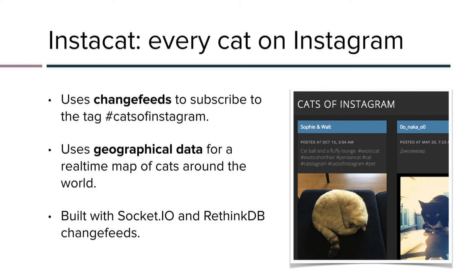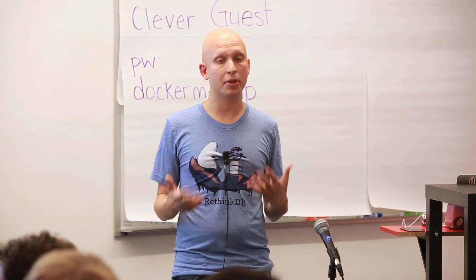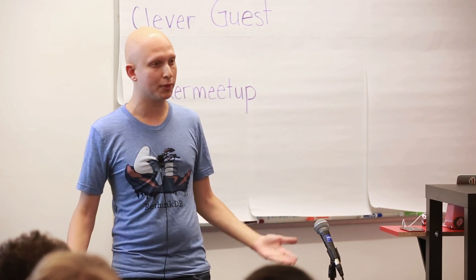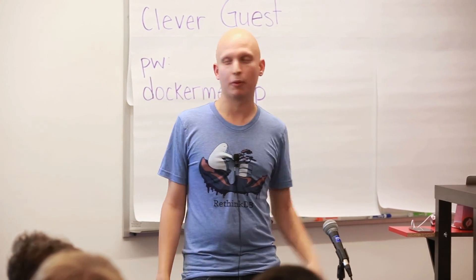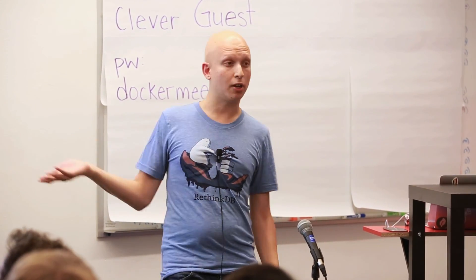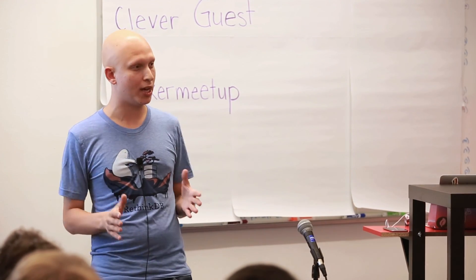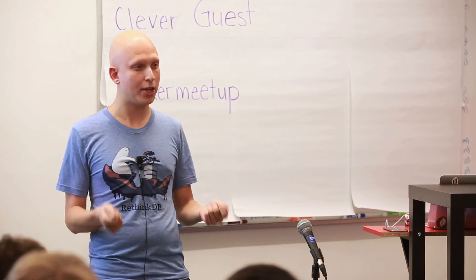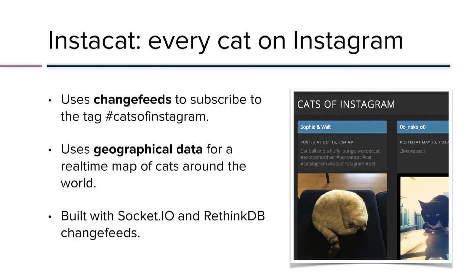I want to talk about deploying an app. Ryan Paul, who used to write for Ars Technica and loves novel web technology, heard that we were building this database and wanted to help demonstrate some features like change feeds. So naturally, the first thing he built had to do with cats — because it's the internet and everyone loves cats. He built this app called Cats of Instagram. It subscribes to the popular hashtag 'cats of Instagram,' uses the geo data of each post to build a real-time map of cats being posted around the world. The app is built with Socket.io and RethinkDB change feeds.